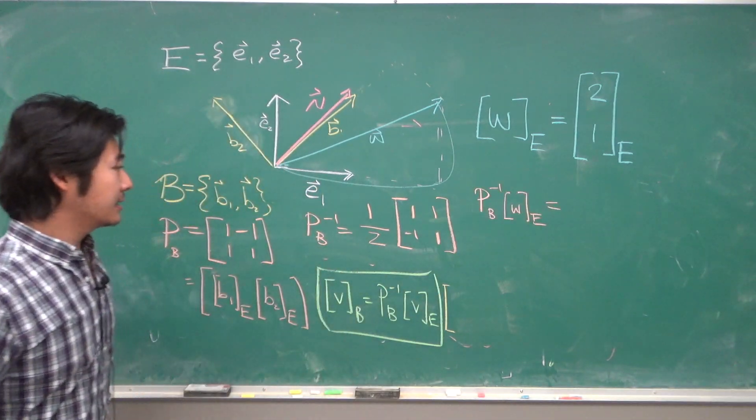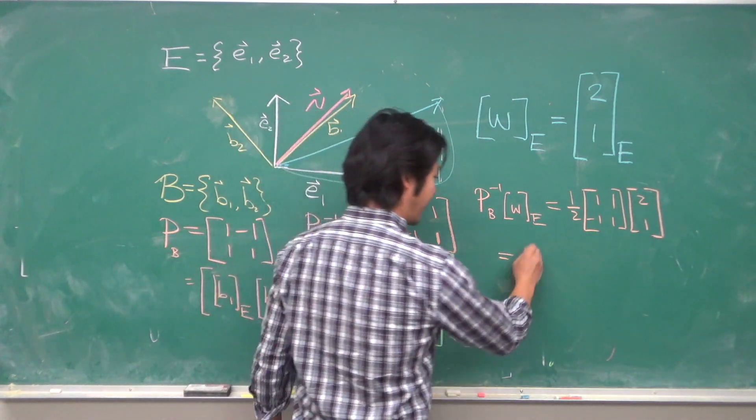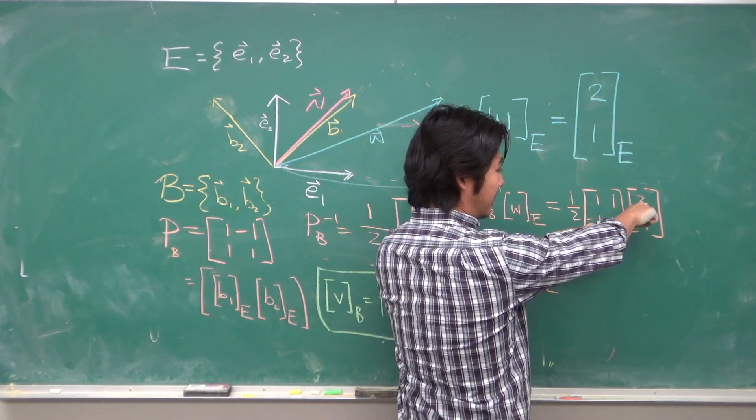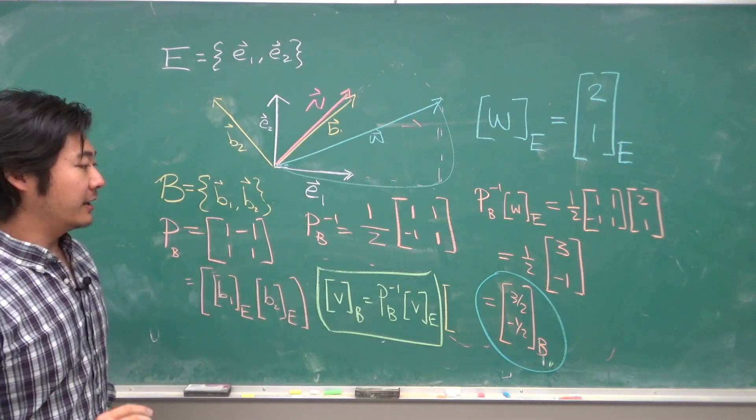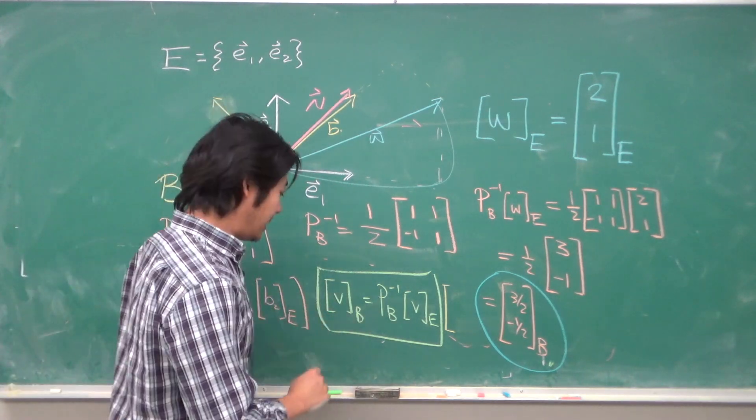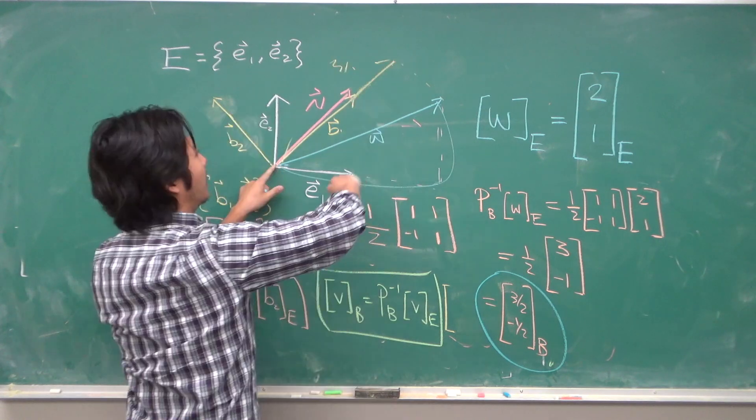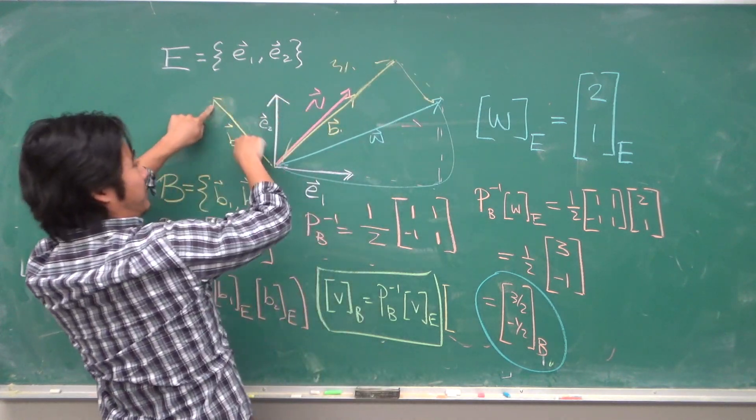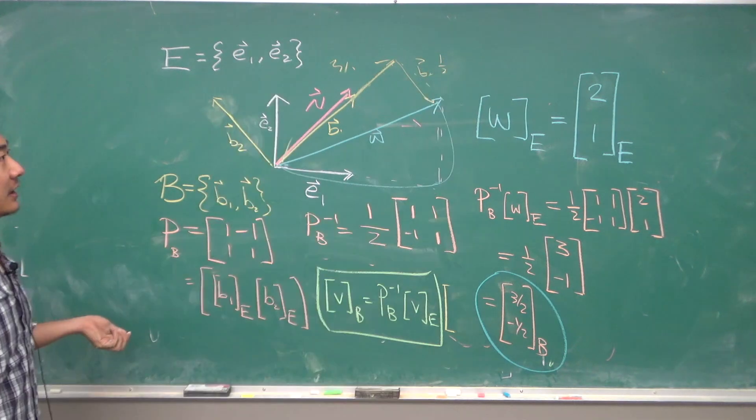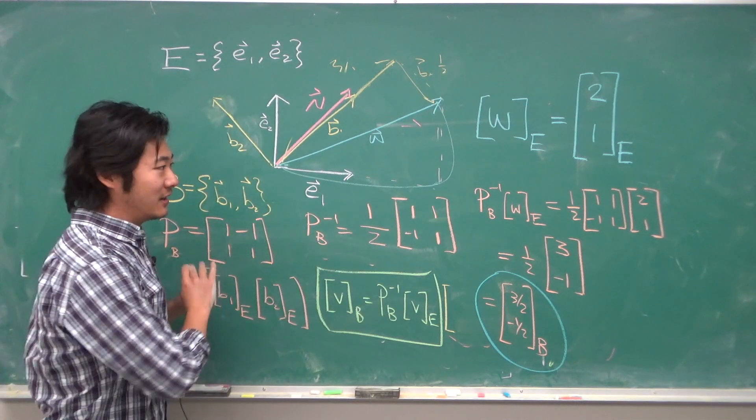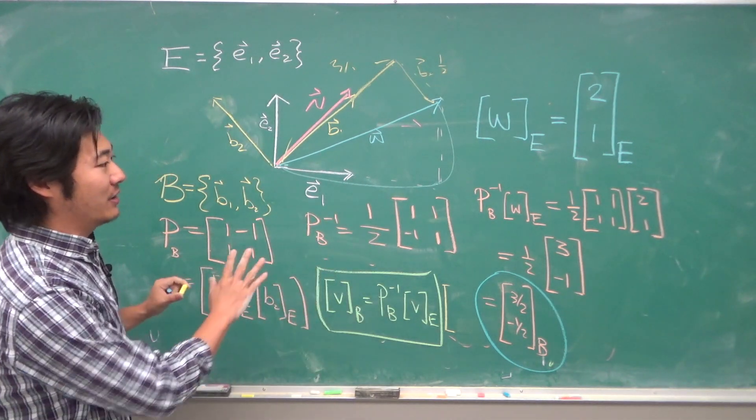So, I get that this will be 2 plus 1. Negative 2 plus 1 is negative 1. So, my W vector in the B basis was, I extend this 1.5 amounts and then, I go down half as much B2, which kind of looks like it's correct. If we had nice graph paper, then I could have made a better drawing.